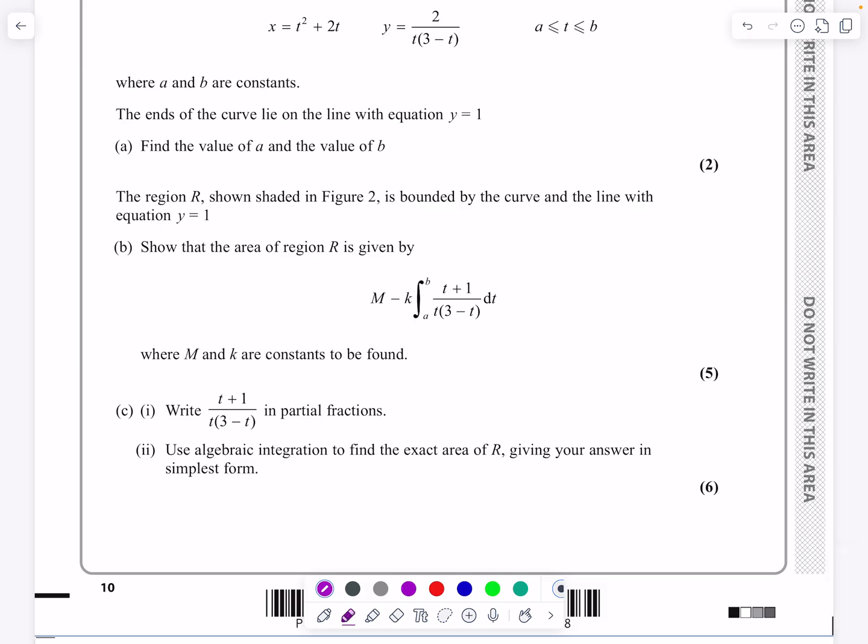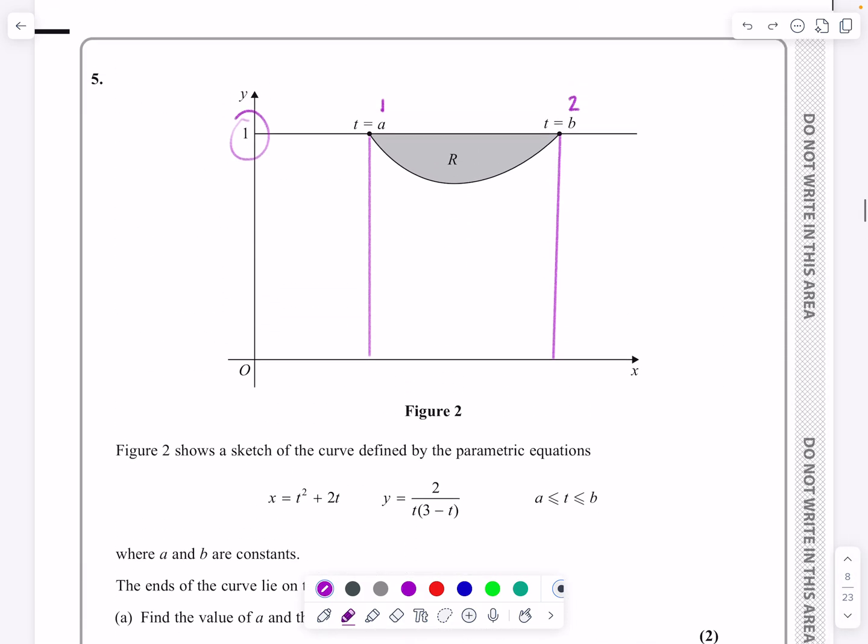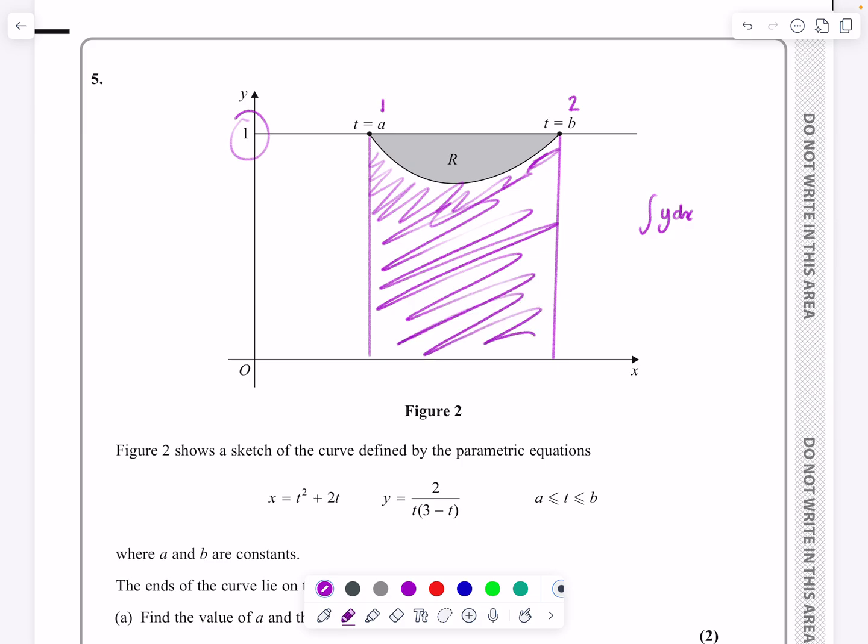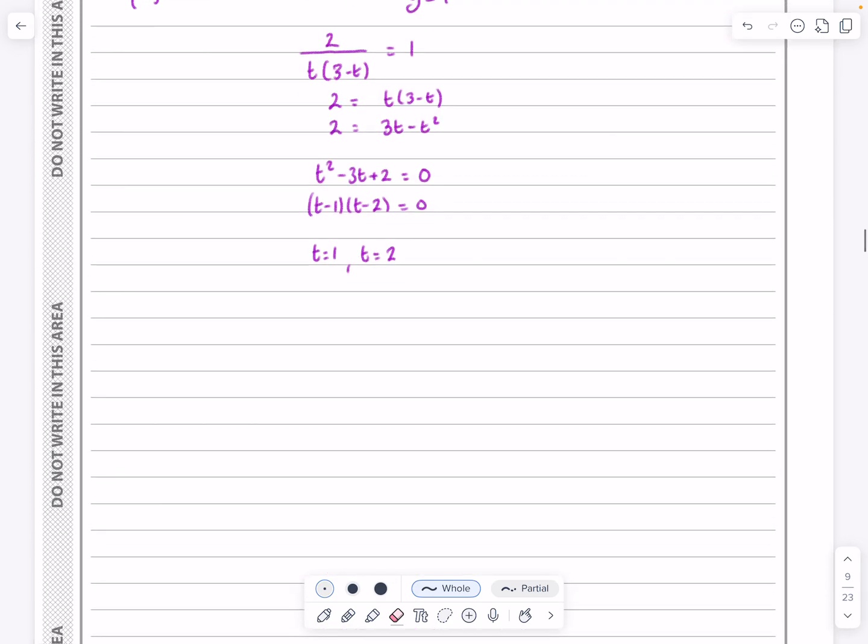Part B then says, can we work out the region R? Can we show it's given by this thing here? Well, I can certainly make a start on it. If I want to work out the region R, well, the first thing I have to say is that if I do the integral of Y dx, that gives me the area under the curve, the area between the curve and the X axis, that's not quite what I want. So if I want to work out R, R is going to be the rectangle.